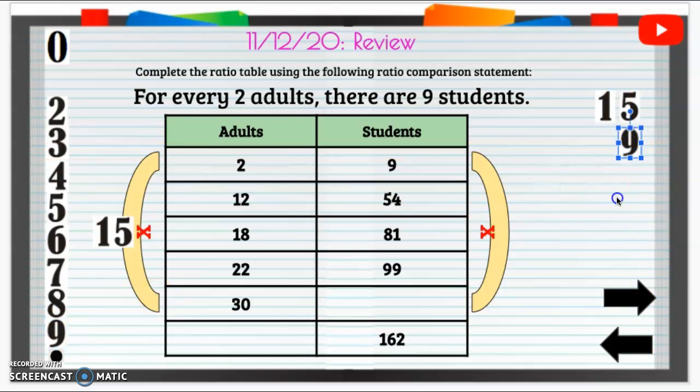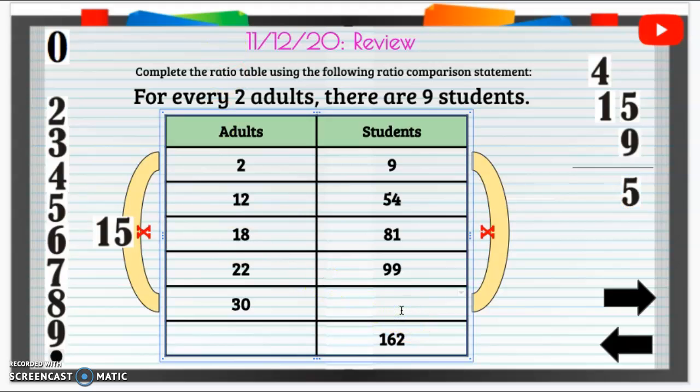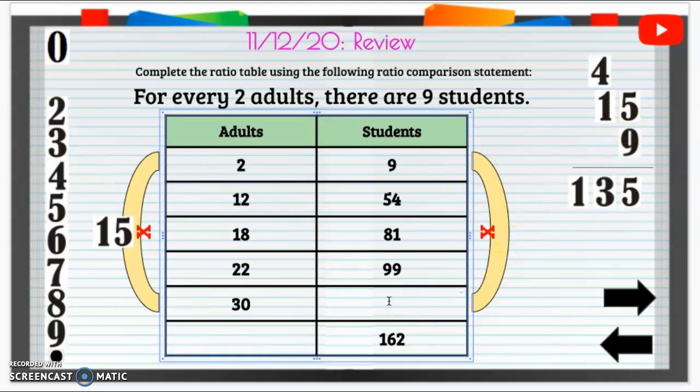Nine times 15. I know that nine times five is 45. And then I know that nine times one is nine. Plus four is 10, 11, 12, 13. So one and three. So nine times 15 is going to be 135.